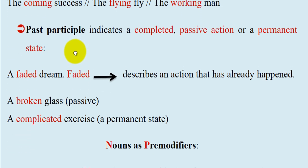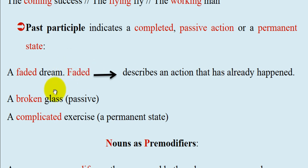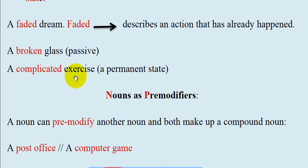The past participle indicates a completed or passive action, or a permanent state. Example: a faded dream — 'faded' describes an action that has already happened, so this is past participle, -ed. A broken glass — passive. A complicated exercise — a permanent state, because naturally the exercise being discussed is of a complicated nature.